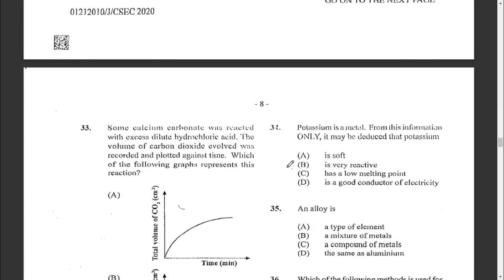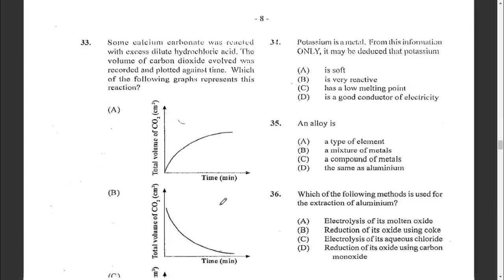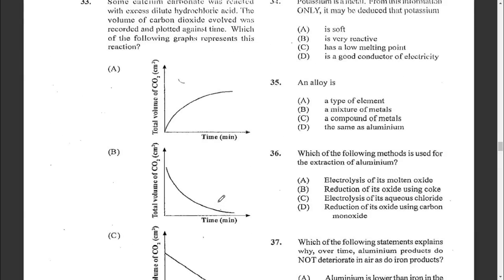Question thirty-three: some calcium carbonate was reacted with excess dilute hydrochloric acid. The volume of carbon dioxide evolved was recorded and plotted against time. As the reactants deplete, the product forms. The graph of volume of CO₂ versus time would show increasing volume that levels off as the reaction completes. The answer is C.